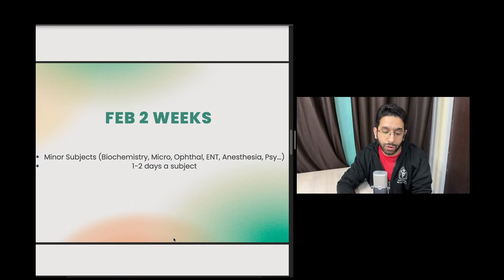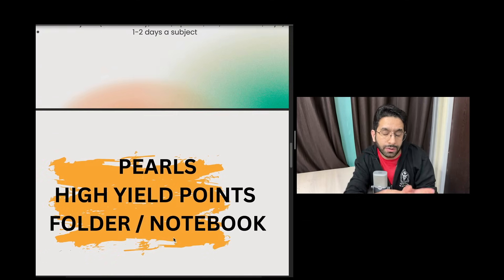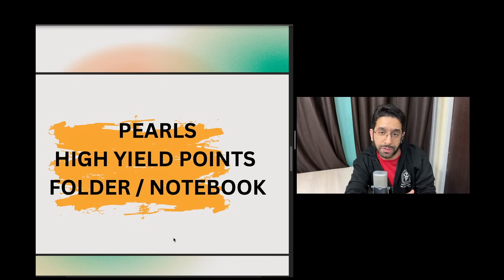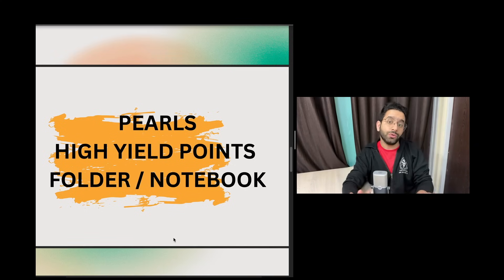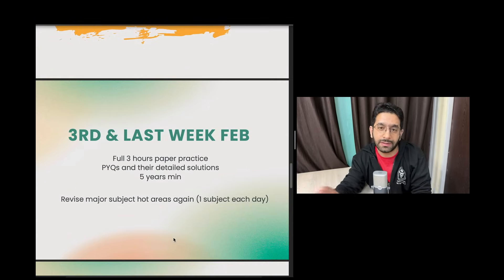As you're reading these 19 subjects, as you're reading your major and minor subjects, I want you to create either a folder in your phone gallery or prepare a separate notebook where you note high-yield points. They can be one-liners, an important table, an important figure - just store it at one place. Things that are either volatile, you tend to forget these points, or very important, repeatedly asked questions - just store them at one place, maybe a 100 to 200 page notebook or a folder in your phone that you can revise.